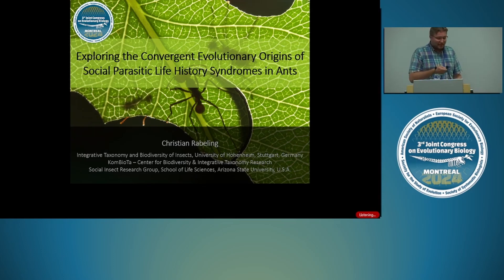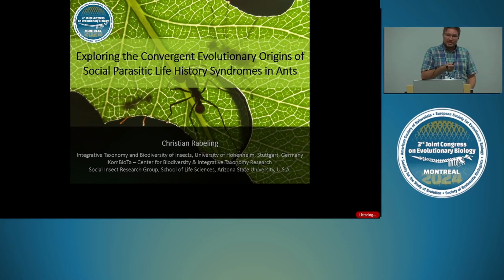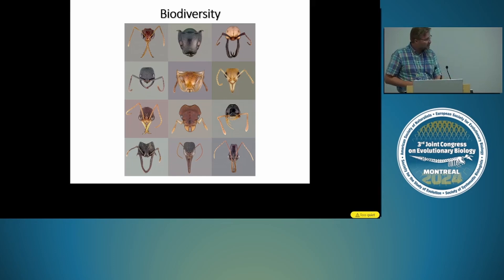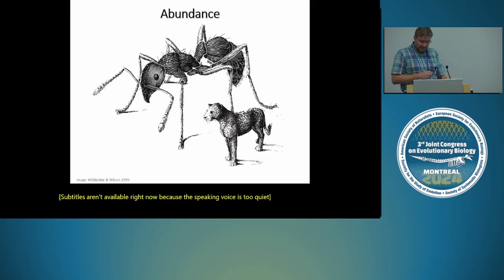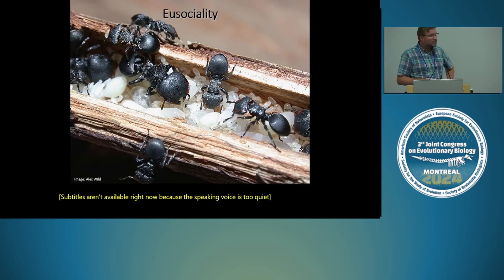Good afternoon. My name is Christian Rabling, and I would like to talk about exploring the convergent evolutionary origins of social parasitic life history syndromes in ants. My lab and I have been interested in how changes in behavior and changes in social organization contribute to the speciation process. We study ants because they are a great study system for evolutionary biology: there are over 14,000 described species globally, they are extremely abundant in all terrestrial ecosystems, and they carry important ecological functions.